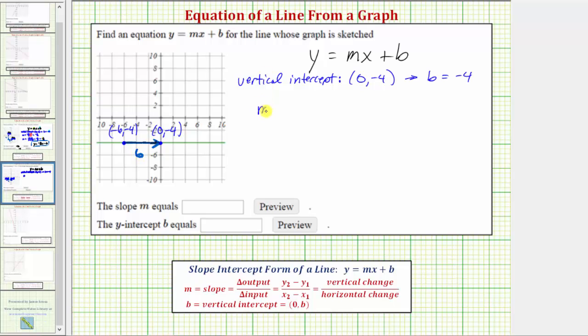Which means the slope m equals the vertical change, zero, over the horizontal change, six. Zero divided by six equals zero. Remember, this is true for any horizontal line. Any horizontal line has a slope of zero.